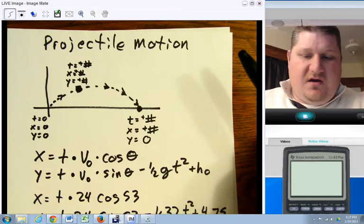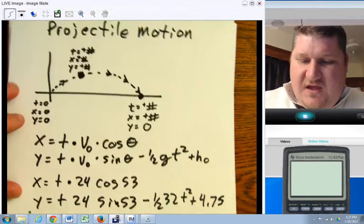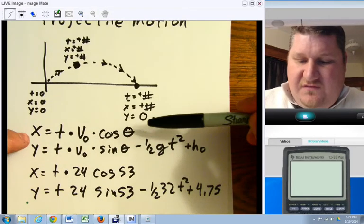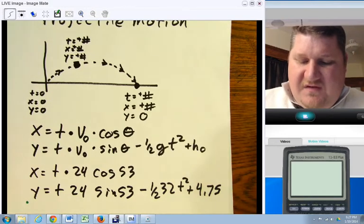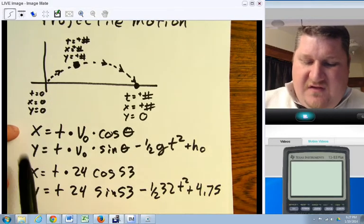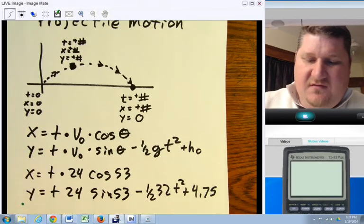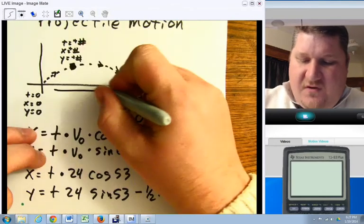Now, we have a couple things that we're going to need to use. It's parametric because we're going to use two equations, these two equations right here, to represent the motion in x and the motion in y.